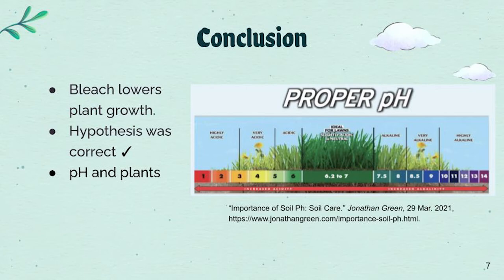It is important to have a proper pH and the proper amount of nutrients while growing any type of plant. It is important to have a pH between 6.2 and 7. When checking my pH for this experiment, the bleach definitely impacted the pH, as I saw numbers ranging from 7.5 to 9, which wasn't that great and lowered the growth rate in each group.